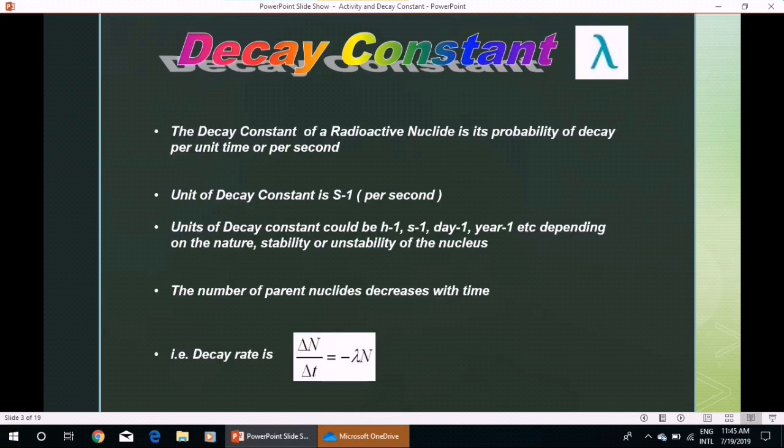The decay constant λ of a radioactive nuclide is its probability of decay per unit time or per second. So units of decay constant are per second. It could be per hour, per second, per day, per year, etc., depending on the nature, stability, or instability of the nucleus.